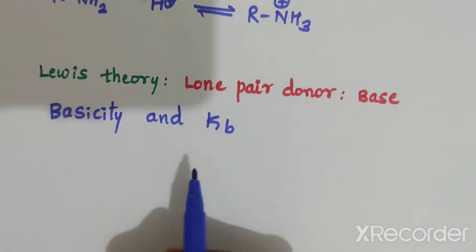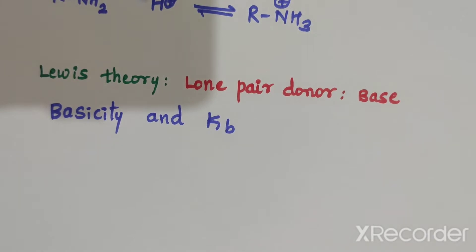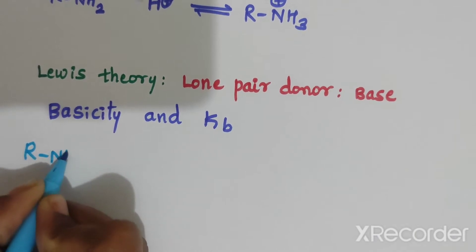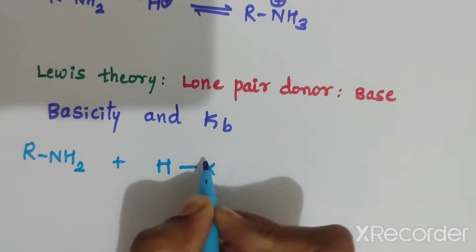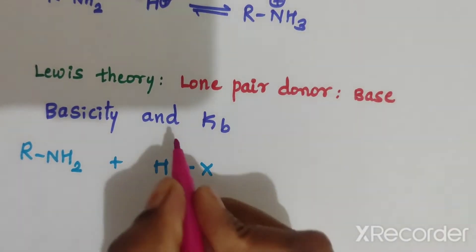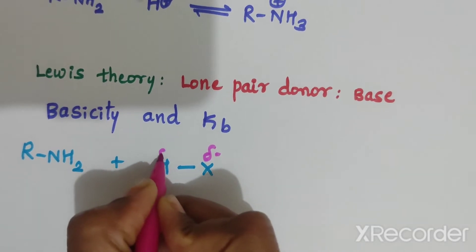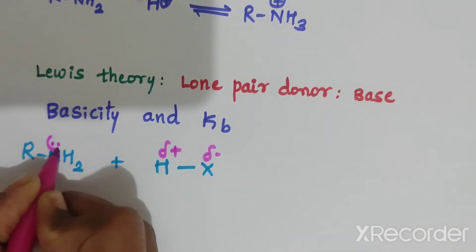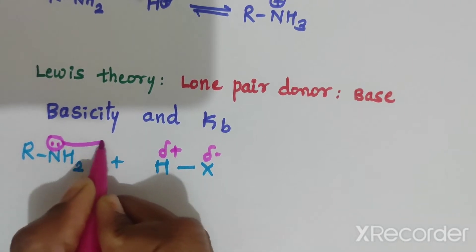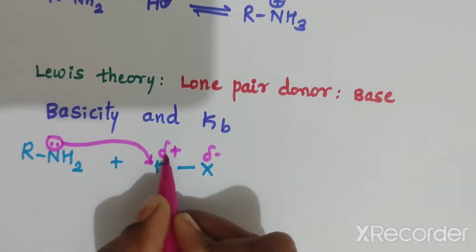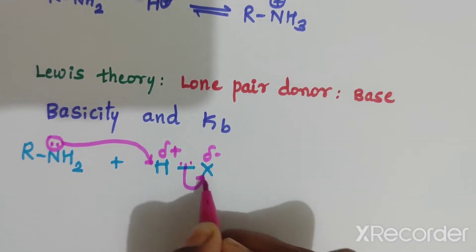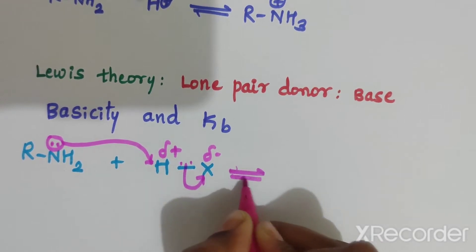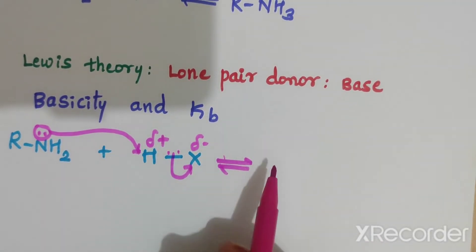Next, basicity and Kb — what is the relation between basicity and Kb? Amines, R-NH2, on treatment with HX — where HX has a negative charge on X and positive on H — the nitrogen lone pair attacks the proton because it is delta-positive, and the electrons shift toward the halide. All these reactions are in equilibrium and the reverse reaction is possible.